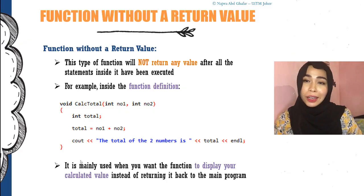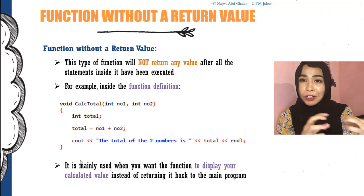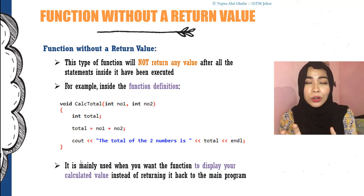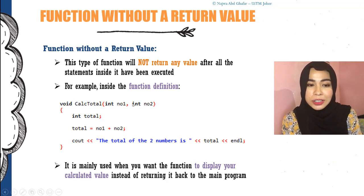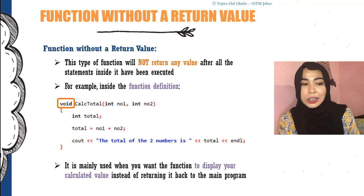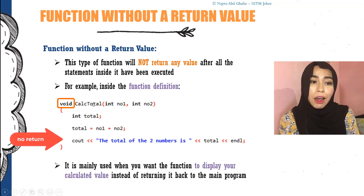Let's move on to the next type of function: function without a return value. The concept is the same as a function with a return value, except this time there is no return statement at the bottom. Just from its name, we know this function will not return any value. Since it does not return anything, at the function definition you need to place 'void'. Whenever you see a function with void, it means the function will not return any value.